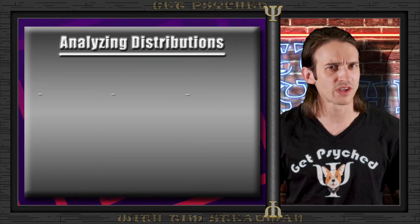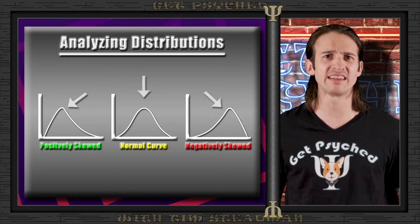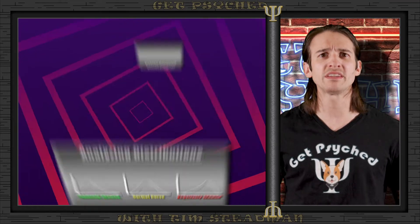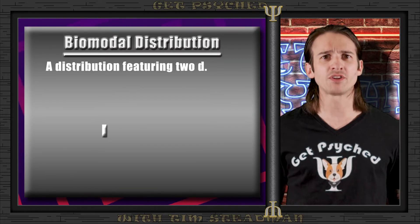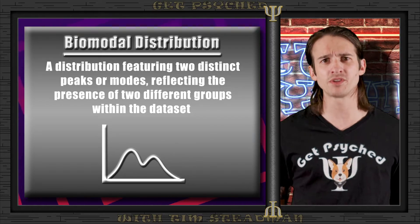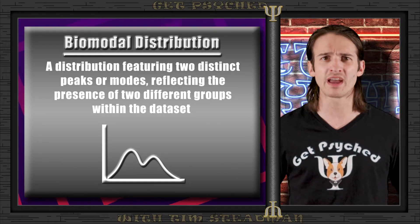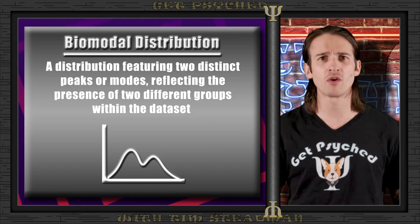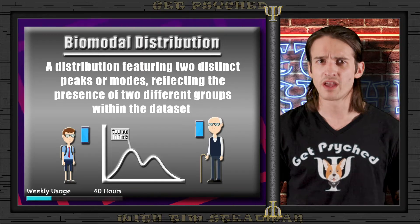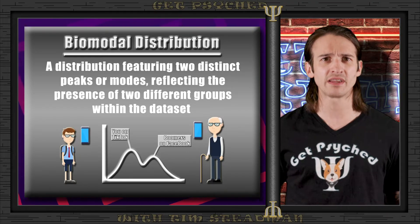Now, what is something that all three of these curves have in common? All three forms of distributions only have one peak in the data — and that is not always the case. In some research, we see bimodal distribution occur, which is when the data shows two distinct peaks rather than just one. Bimodal distributions generally appear in psychological data where there are two different groups responding to the same survey or test differently. For instance, imagine two age groups responding to questionnaires about technology usage. Younger respondents might show high usage rates, while older respondents show another peak at lower usage, resulting in two distinct peaks in the overall data.